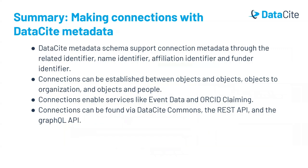At this point, we have gone through the three types of connections that can be made using the DataCite schema. In summary, DataCite metadata schemas support connection metadata through the related identifier, name identifier, affiliation identifier, and funder identifier. Connections can be established between objects and objects, objects and organizations, and objects and people. Connections enable services like event data and ORCID claiming. Connections can be found via DataCite Commons, the REST API, and the GraphQL API. Thank you for your attention. Don't forget to check out the other parts of this training series.